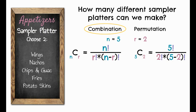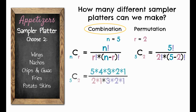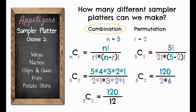Plugging in, we get 5 factorial divided by 2 factorial times (5 minus 2) factorial. Writing it all out: 5 factorial is 5 × 4 × 3 × 2 × 1; 2 factorial is 2 × 1; and 5 minus 2 equals 3, so we do 3 factorial which is 3 × 2 × 1. The numerator simplifies to 120, the denominator is 2 times 6 equals 12, and 120 divided by 12 gives us 10 — the same answer we got by writing out all the combinations.